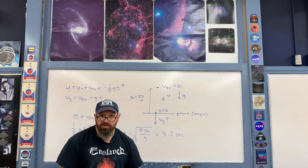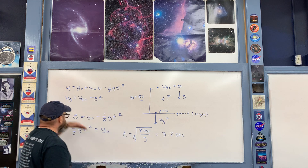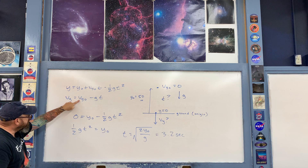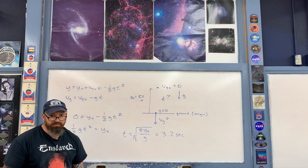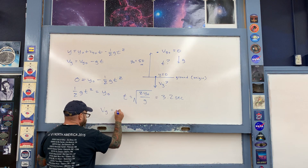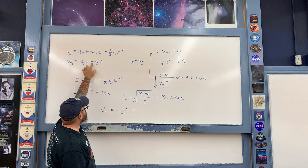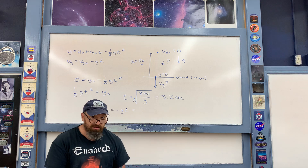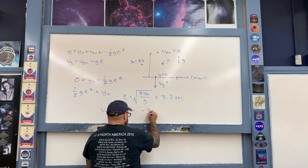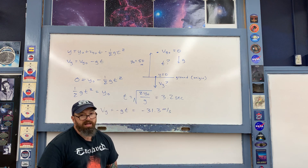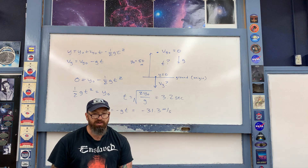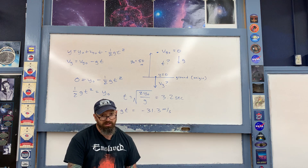In part B of the problem, we calculate the final velocity v_y using the velocity equation. First, we simplify by plugging in the initial velocity as zero, since the object is dropped from rest. That expression simplifies to negative gt. Plugging in g times 3.2 seconds gives approximately negative 31.3 meters per second. The negative sign means the final velocity vector v_y points downwards, as shown on the diagram. The final speed of the object is 31.3 meters per second.